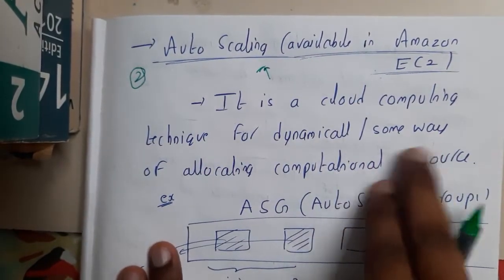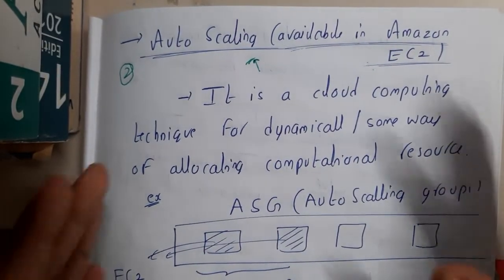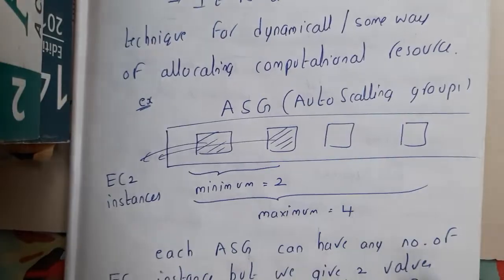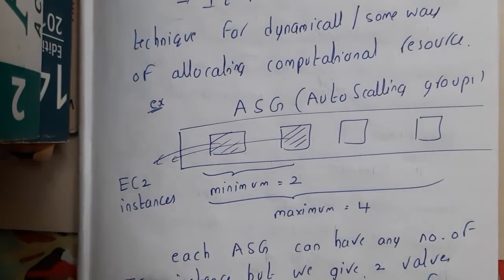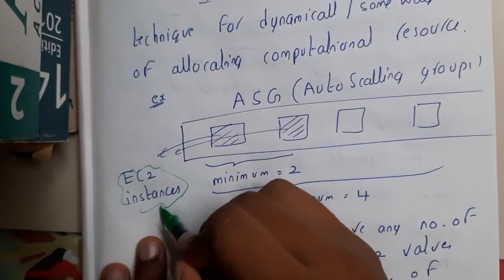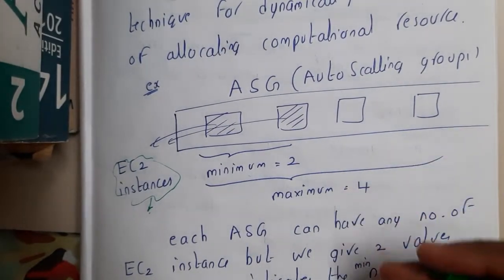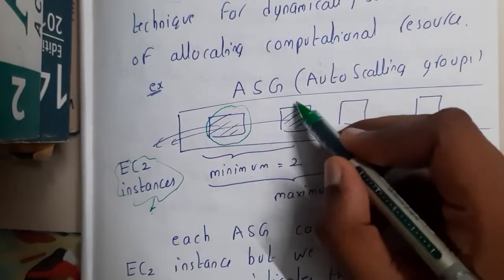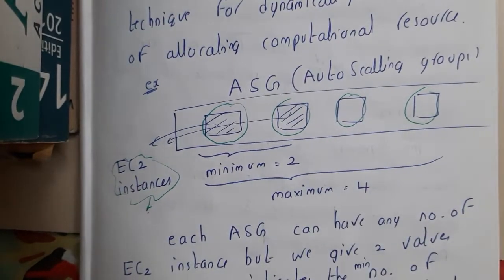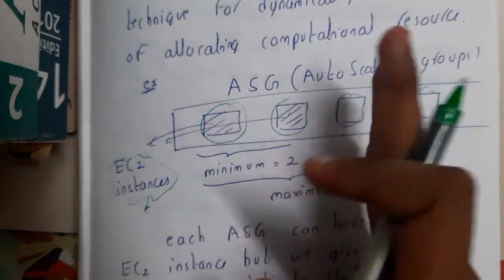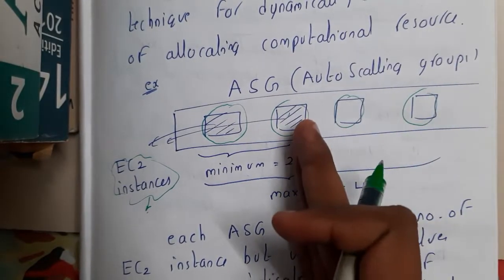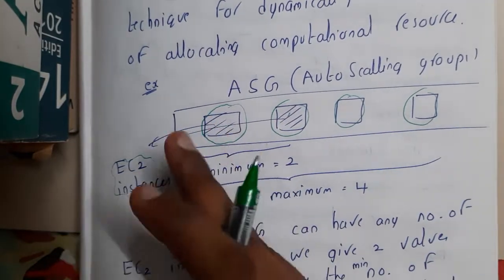Auto scaling is a cloud computing technology for dynamically allocating computation resources. In Amazon Web Services, EC2 has this auto scaling feature. When you create an EC2 instance it has minimum requirements like RAM and storage. We consider EC2 instances as single items, and you give a minimum and maximum number of instances to scale up or down. When there is traffic it moves from minimum to maximum, and when there is no traffic it moves back from maximum to minimum.